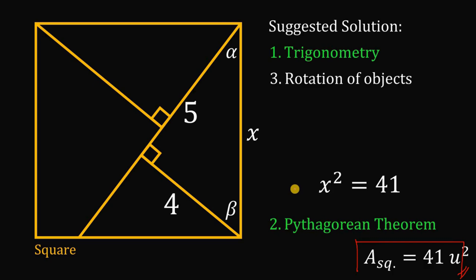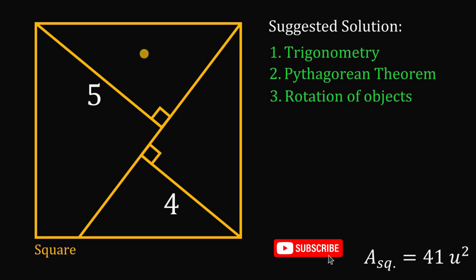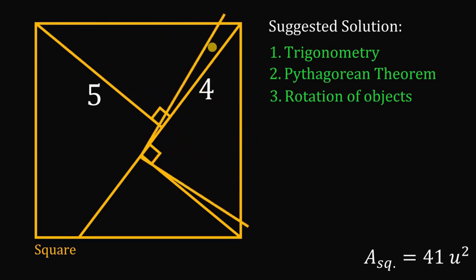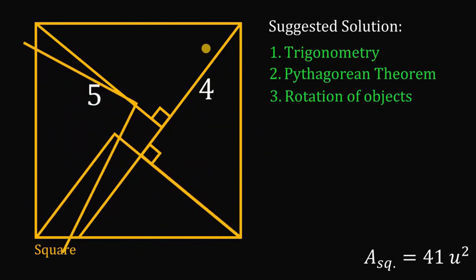Now, how about our third solution — the rotation of objects? What object do we need to rotate? The answer is the right triangle. Before we rotate it, note that these two right triangles are congruent, so this side must also equal 4 units. Now let's rotate this right triangle: first rotation, second rotation, and the last rotation.